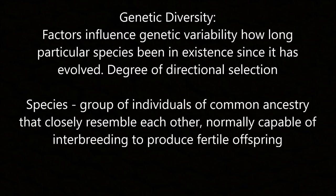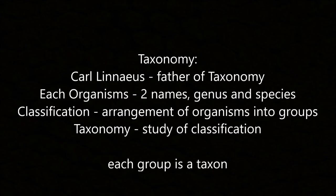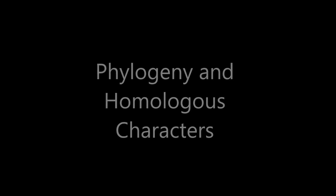Genetic diversity: factors influencing genetic variability include how long a species has been in existence since evolving, and the degree and direction of natural selection. A species can be defined as a group of individuals with common ancestry that closely resemble each other and are normally capable of interbreeding to produce fertile offspring. Classification is the arrangement of organisms into groups; taxonomy is the study of classification. The father of taxonomy was Carolus Linnaeus; each organism has two names — genus and species. Each group is called a taxon.